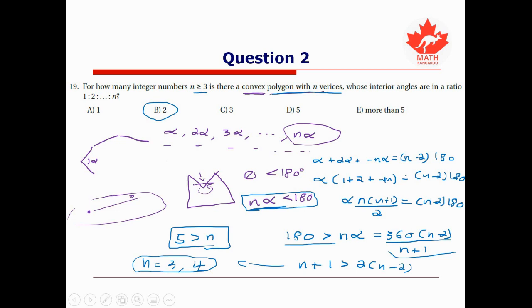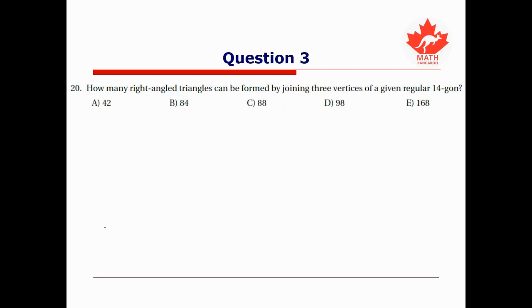For our final question today, we're asked, how many right angled triangles can be formed by joining three vertices of a given regular 14-gon? So before we dive into this problem, I'm going to remind you of what's called the inscribed circle theorem.